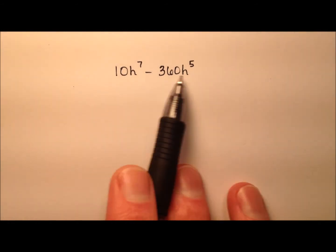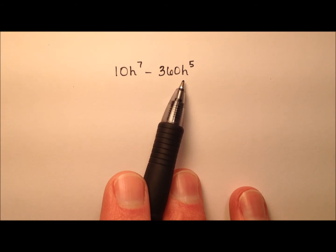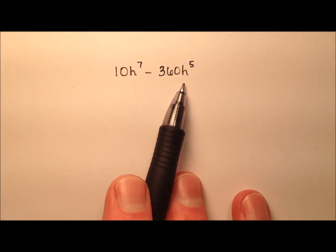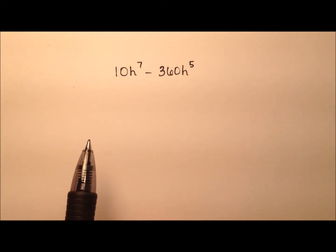In this example, we're going to factor the expression 10h^7 minus 360h^5. The first thing to do with any algebraic expression when you're factoring it is to look for a greatest common factor that can be factored out first.